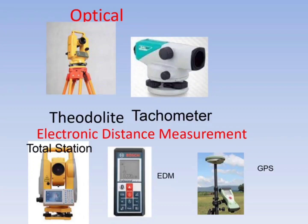Optical measuring instruments include theodolite and tacheometer. Theodolite is used for measuring horizontal and vertical angles. Through tacheometers, we can directly measure distance with staff readings. Total stations have all features of measuring instruments. EDMs are used for less distances, and Global Positioning Stations are also used.